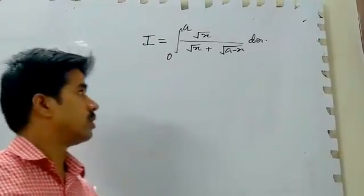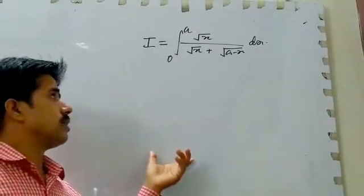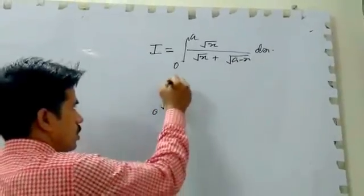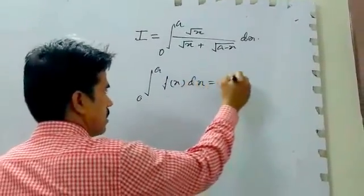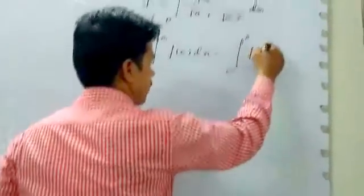In these questions we observe that we can apply our properties: the integral from 0 to A of f(x) dx is equal to the integral from 0 to A of f(A minus x) dx.